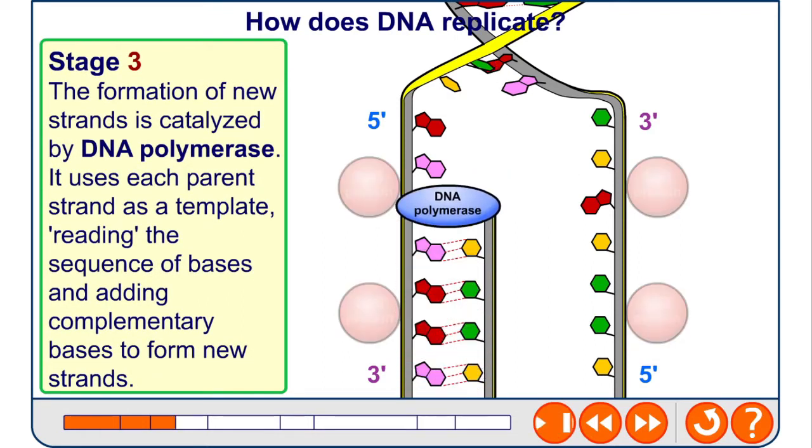The formation of new strands is catalyzed by an enzyme called DNA polymerase. It uses the parent strand as a template, reads the sequence of bases, and adds complementary bases as it moves along to form a new strand.